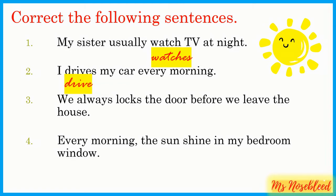Number three: We always locks the door before we leave the house. It should be lock, because the subject is 'we.' Number four: Every morning the sun shine in my bedroom window. It should be shines, because the subject is 'sun' and it's singular, so you need a verb with S or ES.